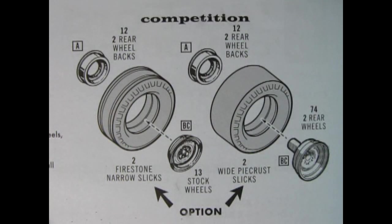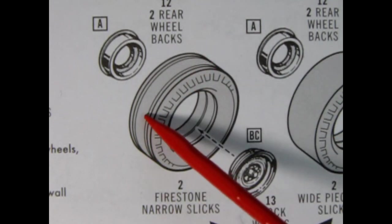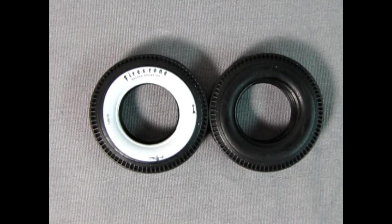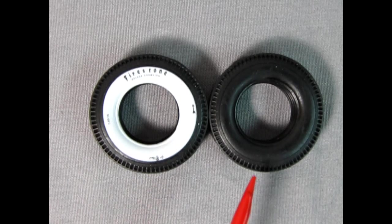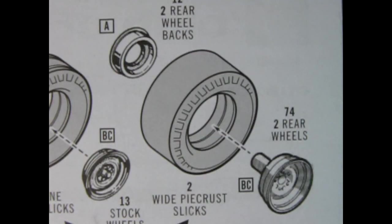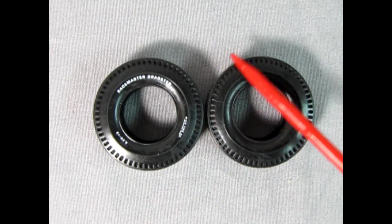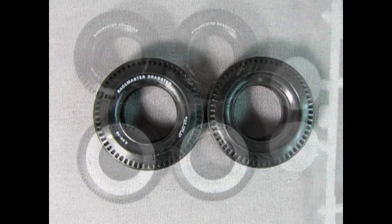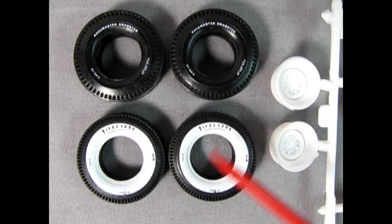For those looking to take their model to the competition scene AMT offers two enticing options. The first is the narrow Firestone Cheater Slicks featuring a slick center tread and grooved outer treads. These rear tires offer a competitive edge and come with wide white walls printed on one side and a black wall printed on the other. The second option is the wider Racemaster Dragster Piecrest Slicks. These tires boast white lettering on one side and a black wall on the other further adding to the racing aesthetic. Both sets of competition tires are designed to mount on factory steel rims ensuring authenticity in your build.